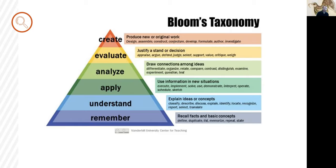Importantly, these skills also represent the kind that lead to success in future professions. At least so far, the top two tiers have defied automation. Computers excel at remembering, and in some contexts they can understand, apply, and analyze information. But evaluation and creation remain the province of human ingenuity and brilliance. Therefore, the more competent our students become at working with knowledge at the highest tiers of the pyramid, the more likely they are to find fulfilling positions and future success.